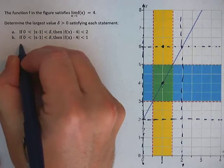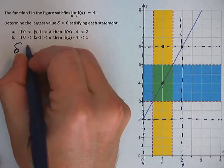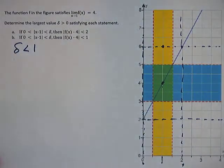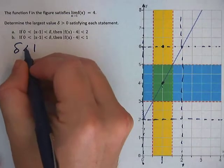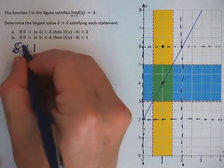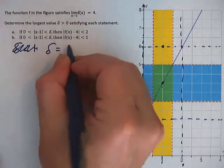So we would say our delta needs to be less than 1. Or we can say delta is going to be equal to 1. Delta is going to be equal to 1.